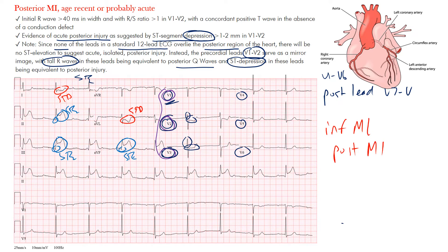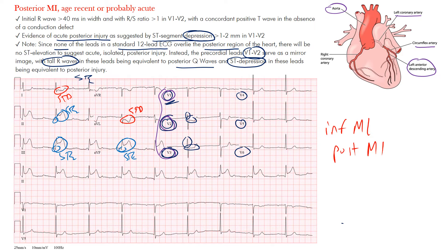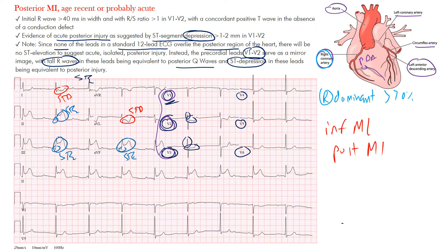Let's review the anatomy. Here's your aorta giving off your arteries — here's the left coronary artery, then the left circumflex going around the left lateral portion, and the left anterior descending coming over the anterior portion of the heart. On the right side is the right coronary artery, which supplies the right ventricle and also gives off the posterior descending artery. In right-dominant individuals — over 70% of cases — the posterior descending artery comes from the RCA.